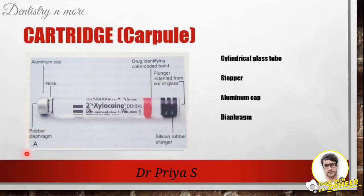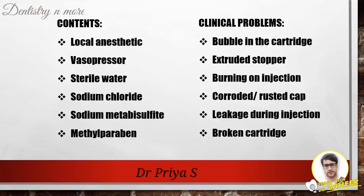The aluminium cap is located at the opposite end from the rubber plunger; it fits around the neck of the glass cartridge, holding the diaphragm in position. The diaphragm is a semi-permeable membrane, usually made of latex rubber, through which the cartridge end of the needle penetrates, forming a tight seal around the glass chamber. Contents of a dental cartridge include: local anesthetic agent, vasopressor, sterile water as solvent, sodium chloride to maintain isotonicity, sodium metabisulphite as an antioxidant to the vasopressor, and methylparaben — a preservative no longer used due to its allergic nature.